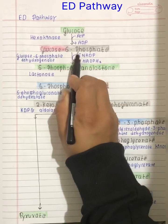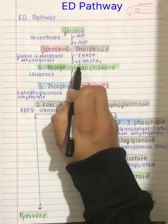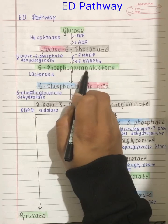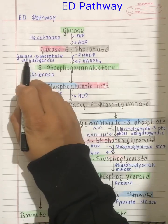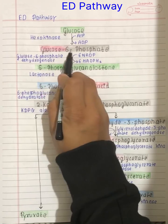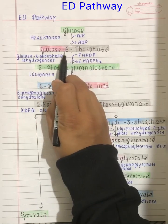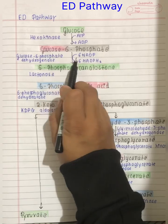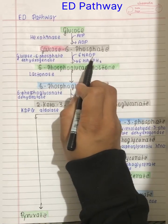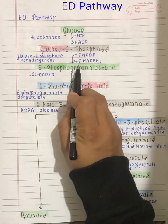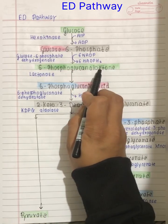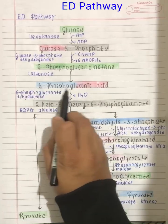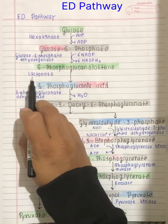The second stage is the oxidative phase, where glucose-6-phosphate is converted into 6-phosphogluconolactone with the help of glucose-6-phosphate dehydrogenase. Here, oxidation of 6 molecules of glucose-6-phosphate takes place. This enzyme is an NADP-dependent enzyme, where 6 NADP is reduced to 6 NADPH2.